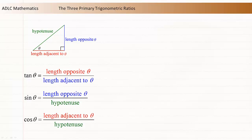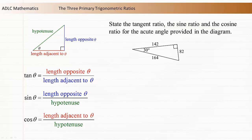Let's look at an example of how we can determine the value of each of these ratios. State the tangent ratio, the sine ratio, and the cosine ratio for the acute angle provided in the diagram. Before determining the ratios, it's a good idea to label the relationship of each side of the triangle to the acute angle.